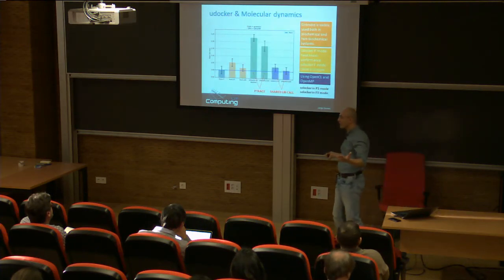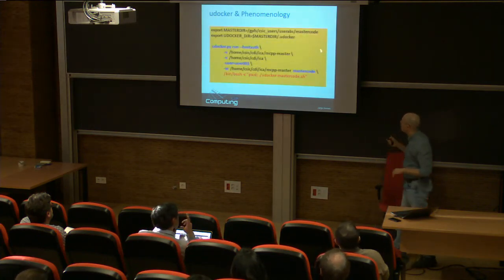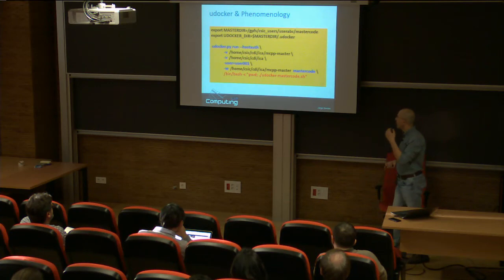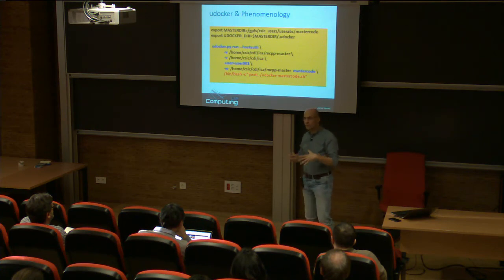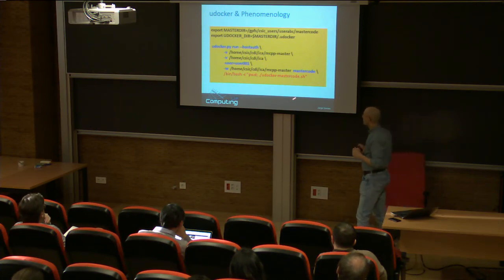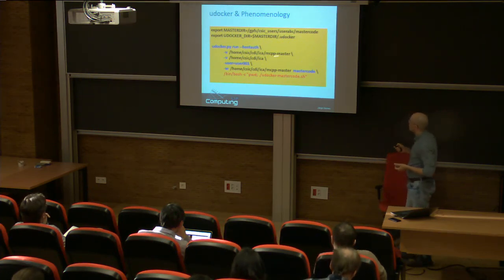This is an example of running one very complex application — master code. It is an application that merges a lot of legacy code in Fortran and other languages, and to compile it with all the dependencies and make it run is non-trivial. One way of running this is with uDocker — they built a container and running it becomes very easy. You just fetch uDocker and run it, mounting certain volumes inside the container.